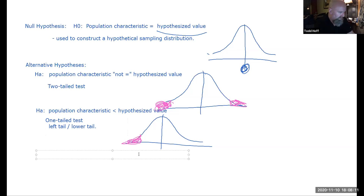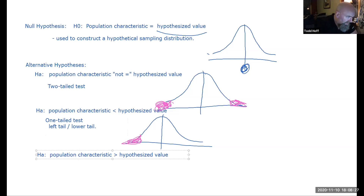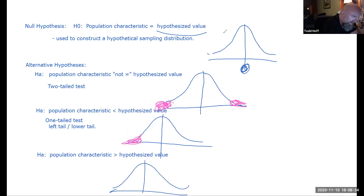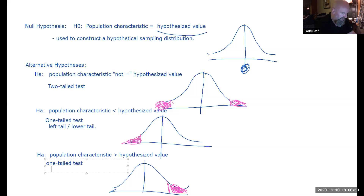The third possibility is that the population characteristic is greater than the hypothesized value. We'd reject if we get sample data that gives results too far up onto the upper tail. This is still a one-tailed test — a right tail or upper tail test.